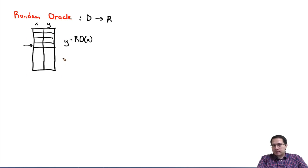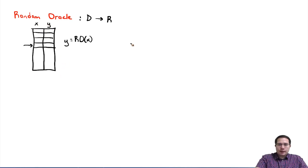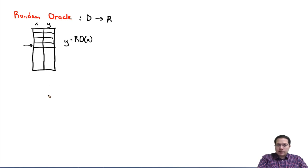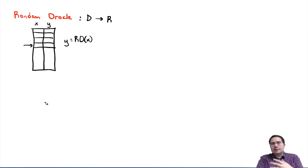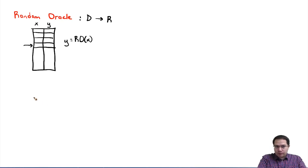This would be a perfect random oracle, but representing such a table requires exponential space. If the domain is m-bit values, there are 2^n rows in this table. Instead, we are going to simulate this random oracle in a randomized way, but remember we need to always return the same output given the same input.